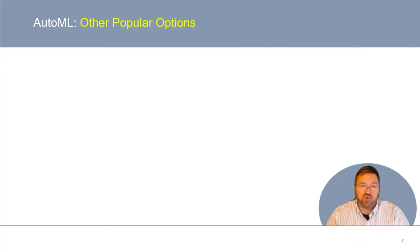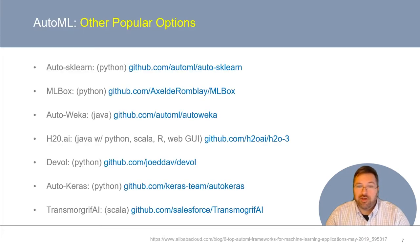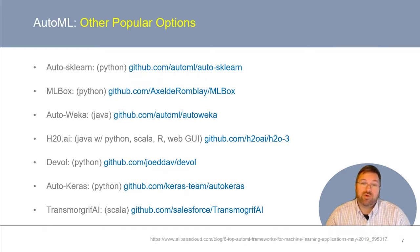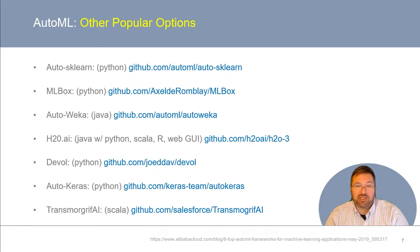Beyond the AutoML tools I've just mentioned, there are a number of popular AutoML tools that have emerged over the last seven years or so. I've listed some of the better known tools along with their respective GitHub links. These tools differ primarily in terms of what parts of the pipeline they automate, as well as what they give you after running, and what coding language or set of machine learning packages were used to assemble them.